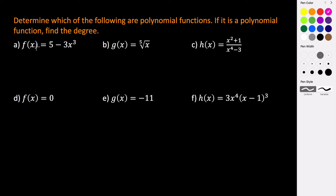In part a we have the function f(x) = 5 - 3x³. Generally when we write polynomial functions we use standard form, which means the terms descend in power — so the highest power comes first. This is not written in standard form; in standard form it would be -3x³ + 5. But that doesn't change anything. This is a polynomial function because x is raised to the third power, three is a positive integer, and both five and negative three are real numbers. Its degree is three, since that is the highest power of x.